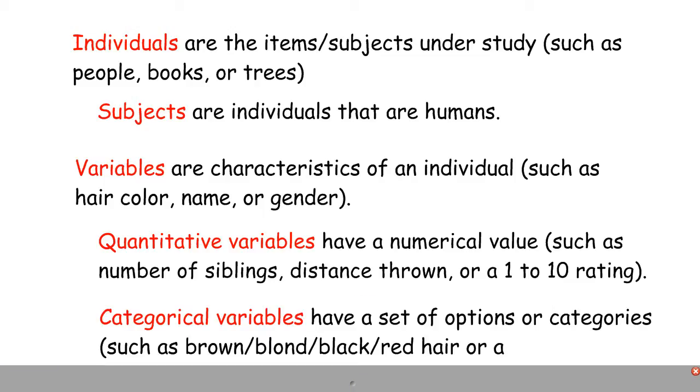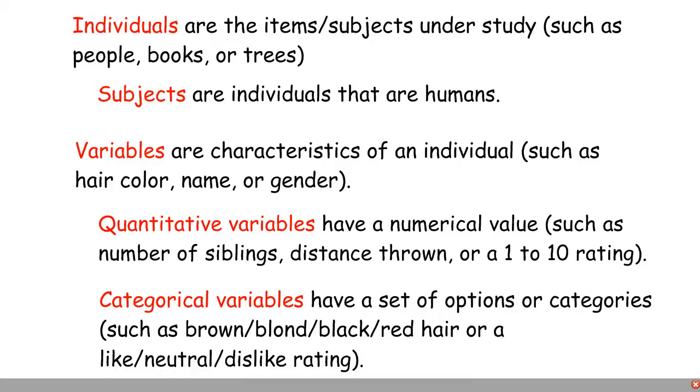Categorical variables are when you have a set of options. So choose one of these four hair colors. Choose whether you like, dislike, or have a neutral feeling towards something. So that would be categorical variables. You can also ask questions that are open-ended, but generally you're not going to be able to do any kind of analysis on that type of data. So we're not going to focus on that right now.